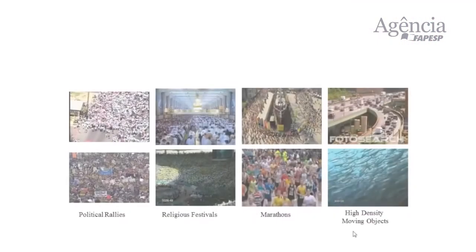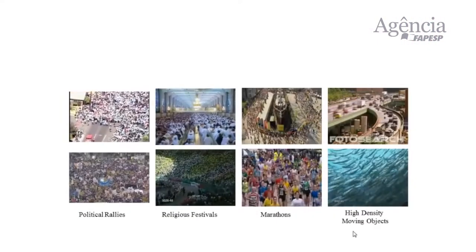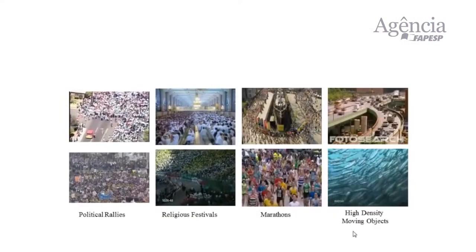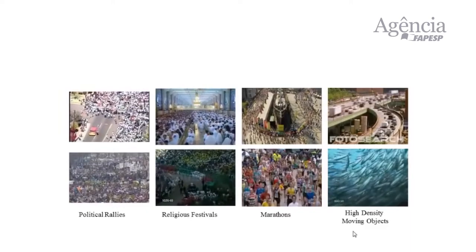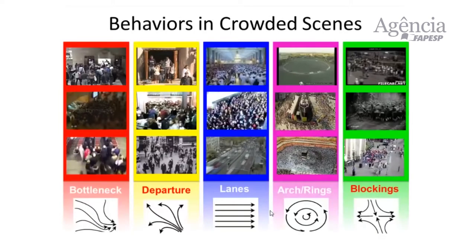Computer vision provides you an extra set of eyes. You can put people to look at the scenes and look at the crowded areas and determine if there's something suspicious happening, there's some crime, or how to manage crowds and so on.